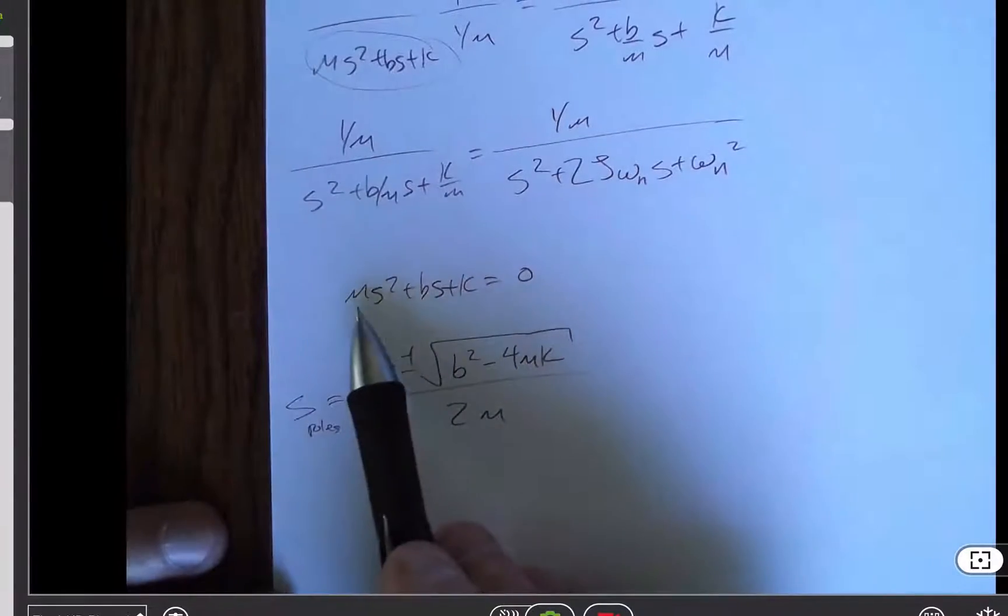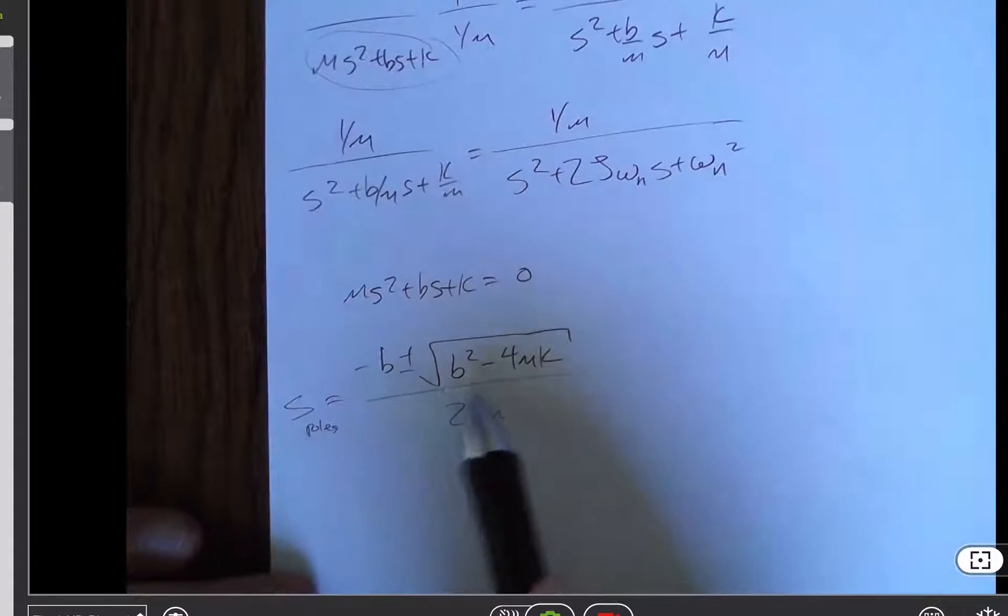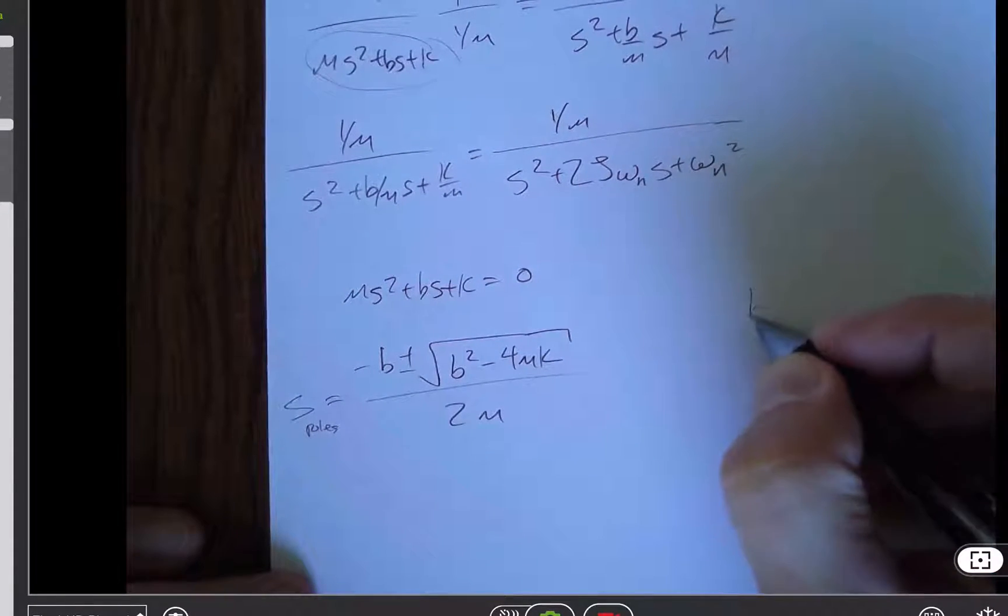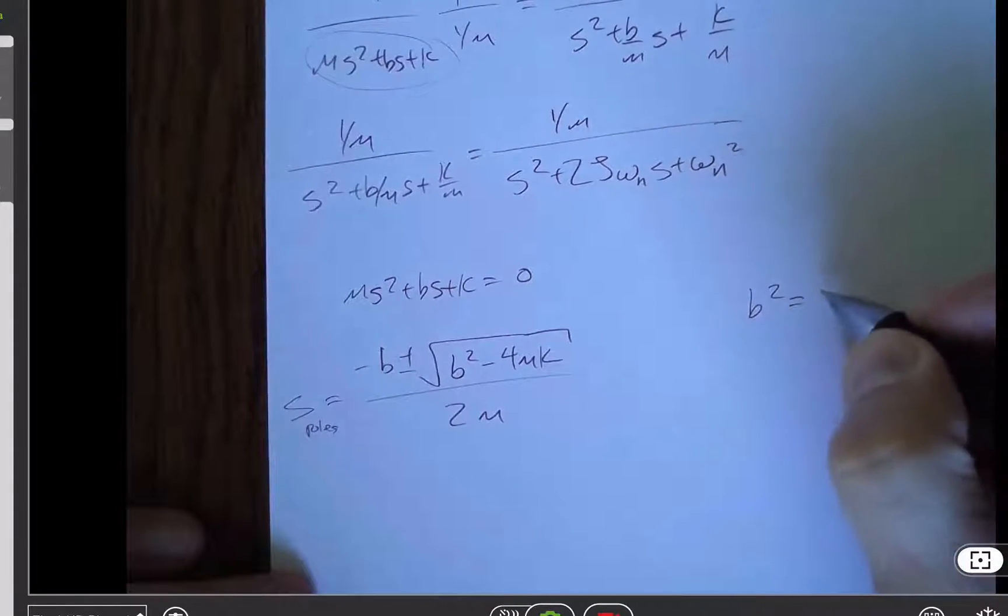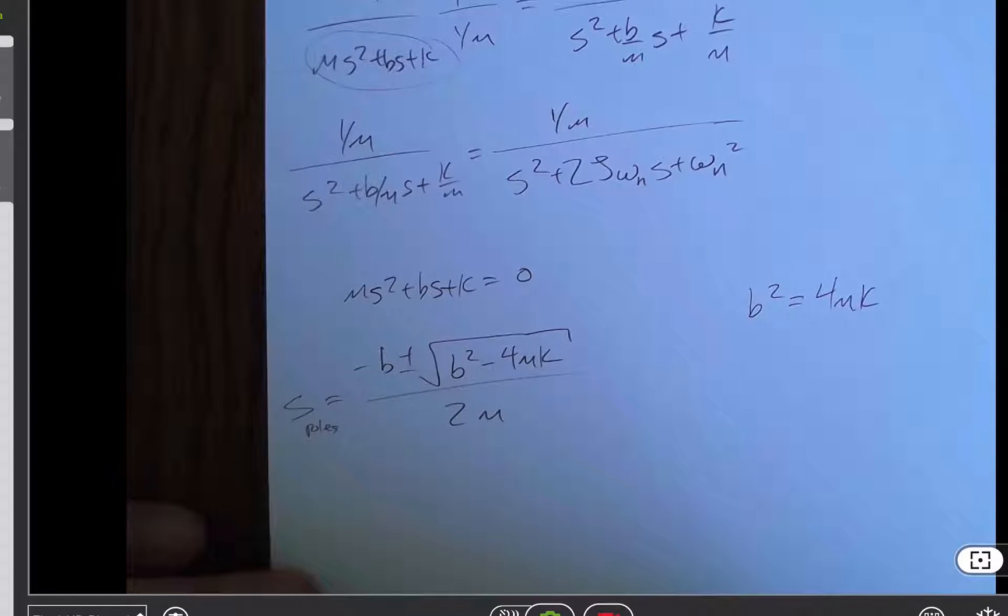And so a in this case is m and c is k and b is b. So something very important happens at this value, b squared is equal to 4mk. If b is less than that value, then we actually have complex roots.